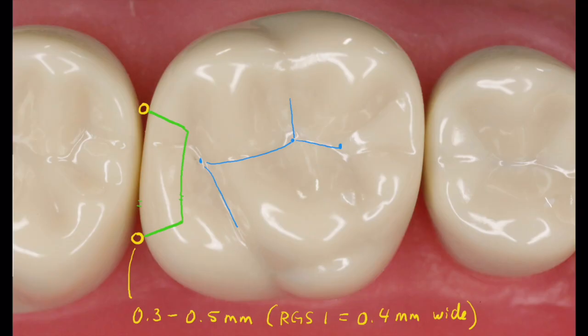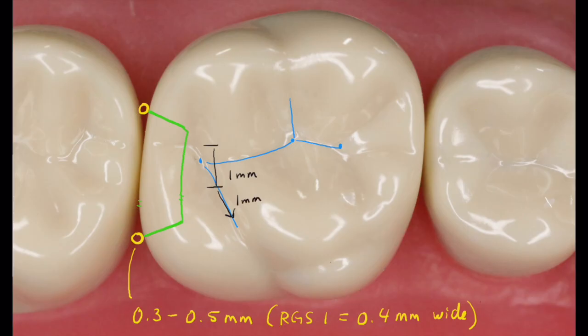On the occlusal portion for the DO we're going to have approximately one millimeter of an isthmus area, and then we're going to extend into the distal lingual groove another millimeter. We're not going to extend into the distal buccal cusp - we're just going to extend into this groove to be as conservative as possible. We'll have a sharp turn here on the lingual.